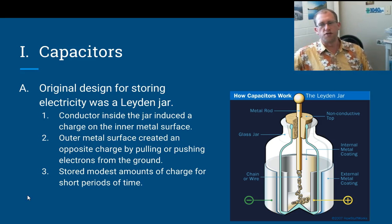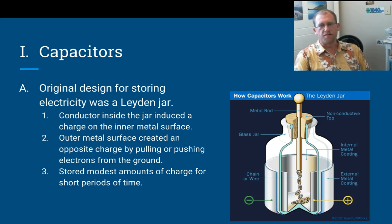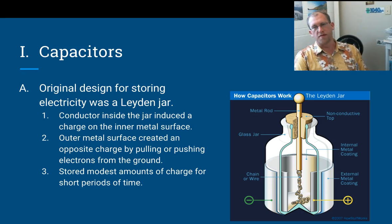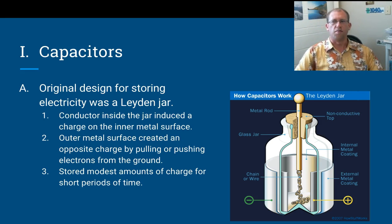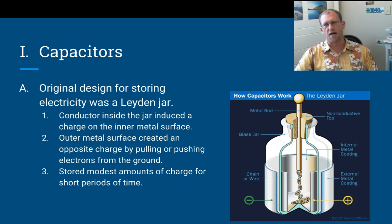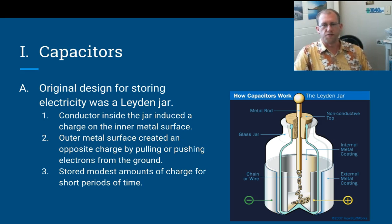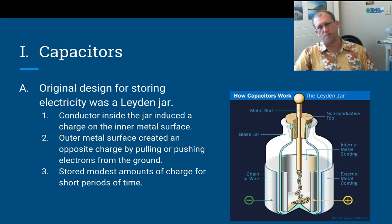Here we go: capacitance and storing charge. The original design for something that would contain electricity for a given amount of time was a Leiden jar, named after a town in Holland where one of the two physicists who developed this device lived. It was also developed by an English chap at the same time, but the Leiden jar name stuck.